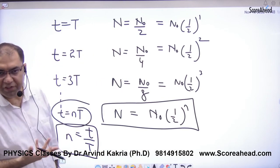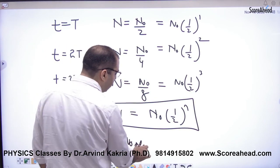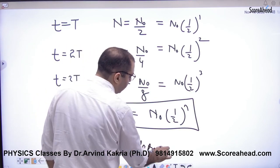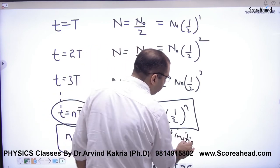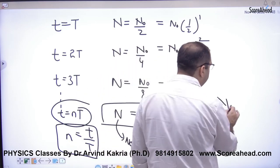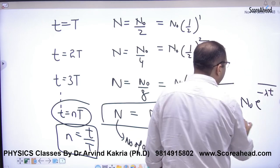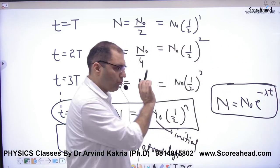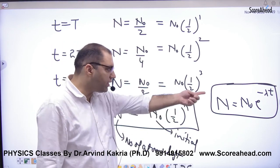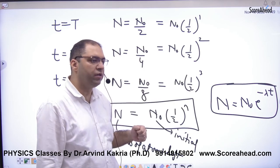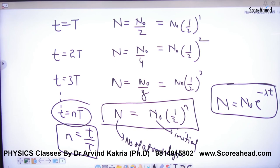N is equal to N0 half raised to power small n. Again, n means number of atoms left in the sample, N0 which was initially present. So now you have two formulas: first formula and second formula. You can use either one in numerical. Most people prefer this because e raised to power is a problem, this is not a problem, so most people use this.